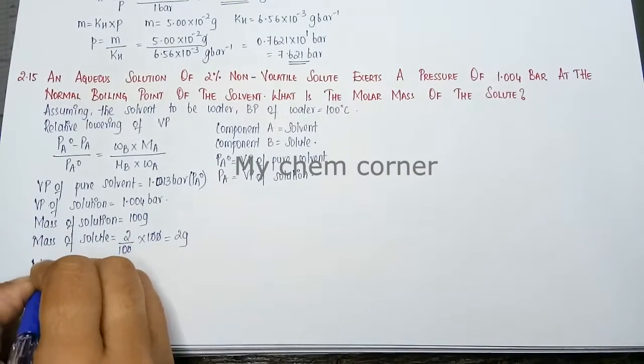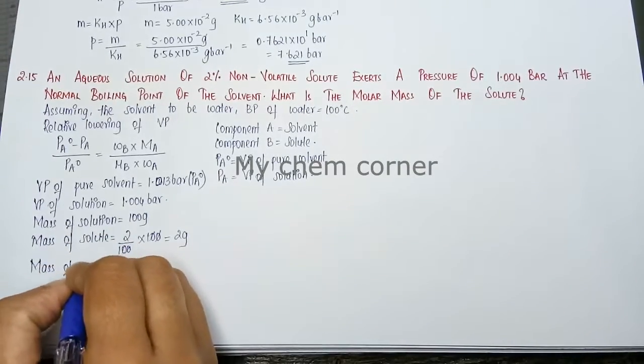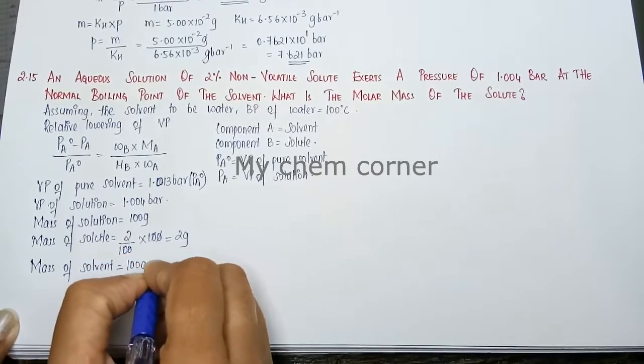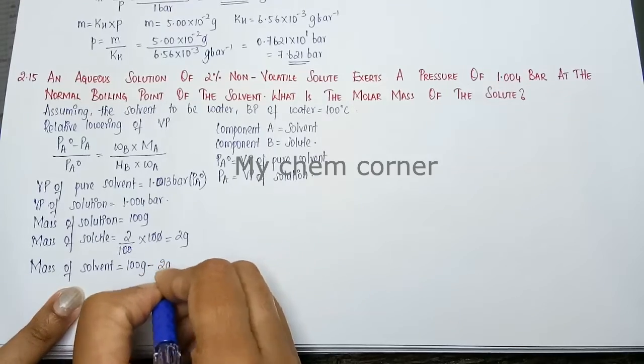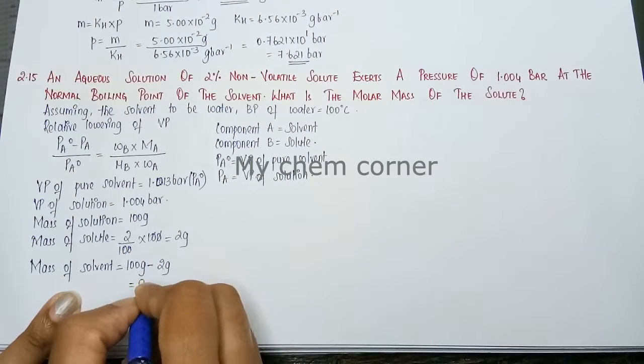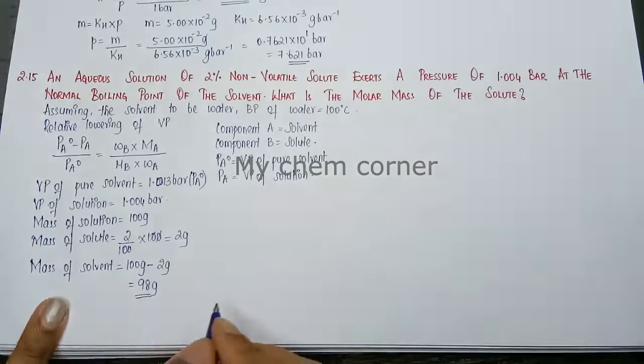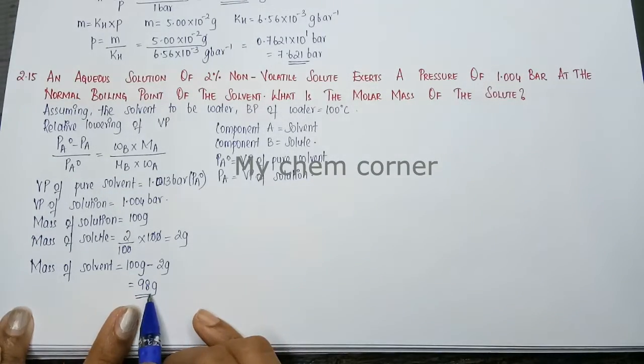Mass of solute, we can easily calculate what is the mass of solvent. So mass of solvent is mass of solution which is 100 gram minus the mass of solute which is 2 grams. Simplify this, I will get 98 grams which is the mass of solvent.